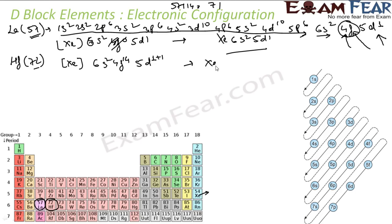So the hafnium electronic configuration will be xenon, and since the 4f orbital is filled, we can choose not to write anything about that, or we can actually write 6s² 5d² and also 4f¹⁴. This is the electronic configuration of hafnium.